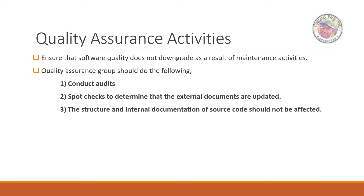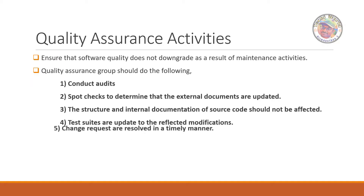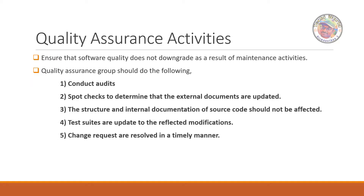The quality assurance group should do the following: conduct audits and reviews, perform spot checks to determine that external documents are updated, and ensure that the structure and internal documentation of source code should not be negatively affected.